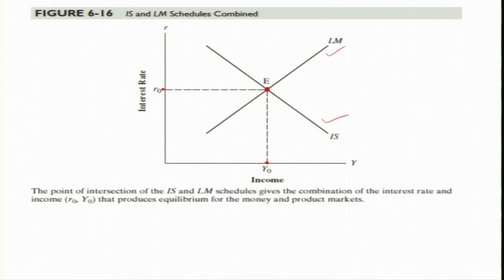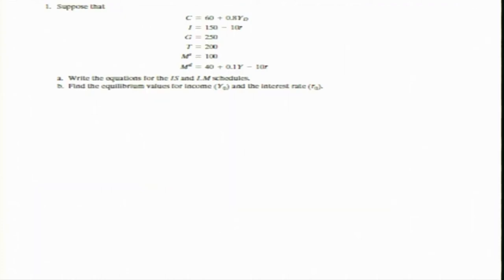At rate of interest R naught and income Y naught, both product market and money market are in equilibrium. You can also do some numerical exercises to find the equation for the IS curve and the LM schedule, as well as calculating the equilibrium values.